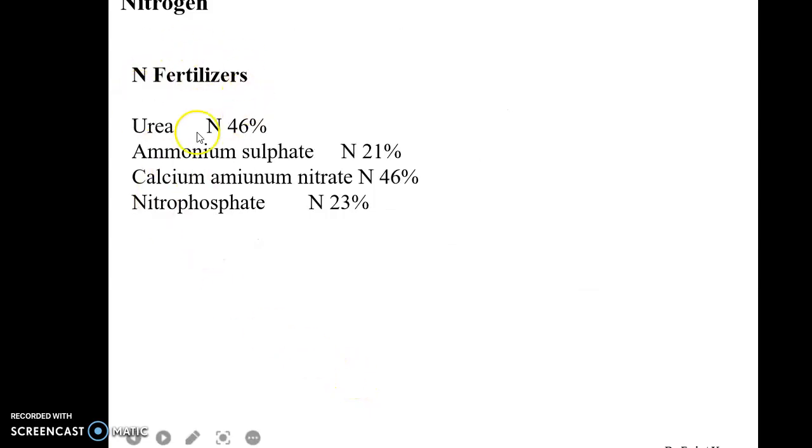Different nitrogen fertilizers that could be used in the case of nitrogen deficiency include: urea, which contains 46% nitrogen; ammonium sulfate, which contains 21% nitrogen; calcium ammonium nitrate, which contains 46% nitrogen; and nitrophosphate, which contains around 23% nitrogen.